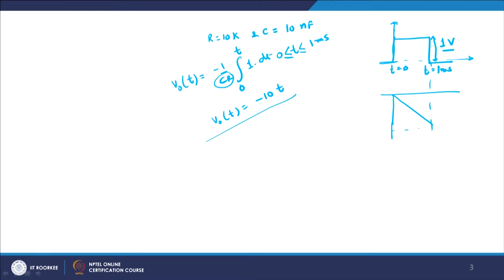The output ramps down to minus 10 volts, and after that it will be a straight line — going back to 0. Why? Because when the input goes to zero, you are integrating zero, so integration of a constant value gives you a ramp, and integration of zero gives you a constant output.